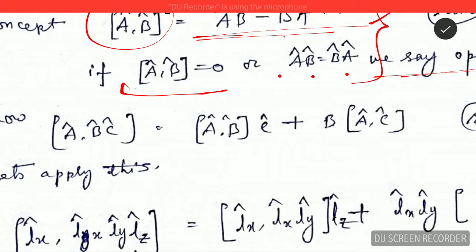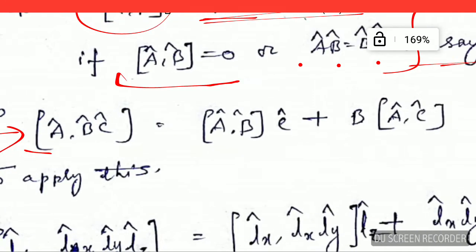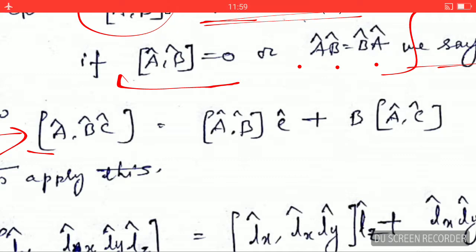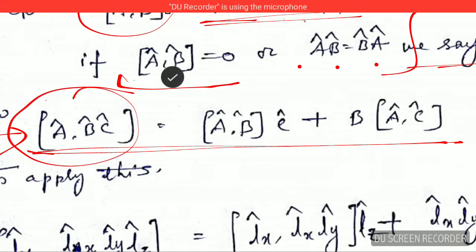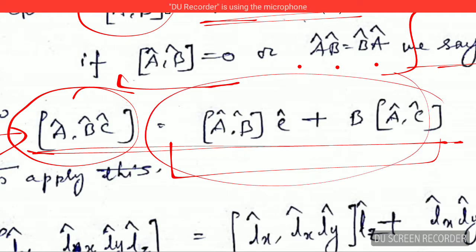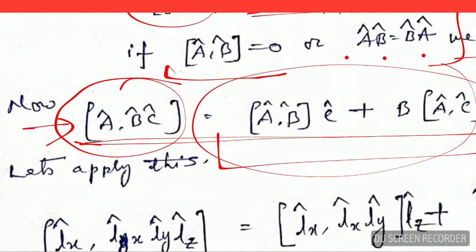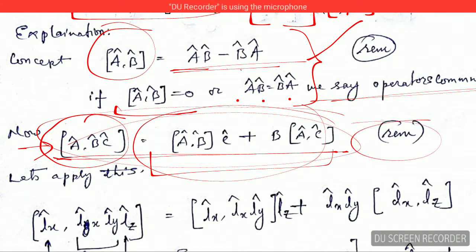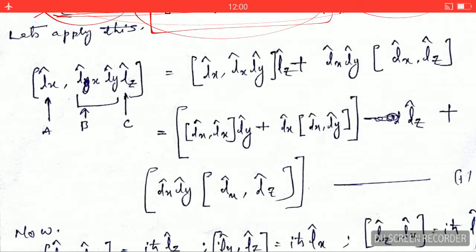There is an important identity related to the commutator written here. You can remember it or understand it — for now, keep it in mind. This commutator can be written in a specific way using this identity, and we will use this identity to simplify our expression. You have to remember this identity along with the previous concept.